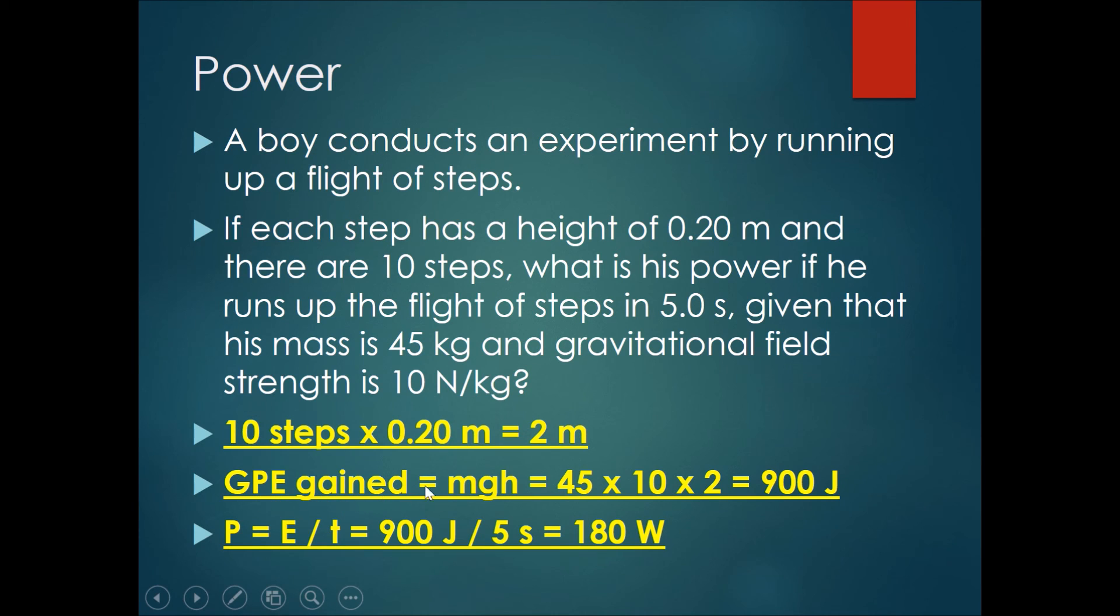So the GPE gain is equal to m times g times h, which is 45 times 10 times 2, and that will get me 900 joules of GPE gain. Lastly, what is his power? He has gained 900 joules of GPE in 5 seconds, so power is equals to energy, 900 joules, divided by time taken to do it, 5 seconds. That will give you 900 divided by 5 equals to 180 watts.